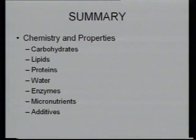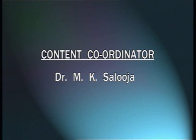To conclude on food constituents, we have discussed the chemistry and properties of carbohydrates, lipids, proteins, water, enzymes, micronutrients, and additives. The chemistry part gives you the 'why' component — why things are happening in the product. We must know the constituents and their properties so that when preparing a food product, you can control the functional properties of the food. Thank you very much.